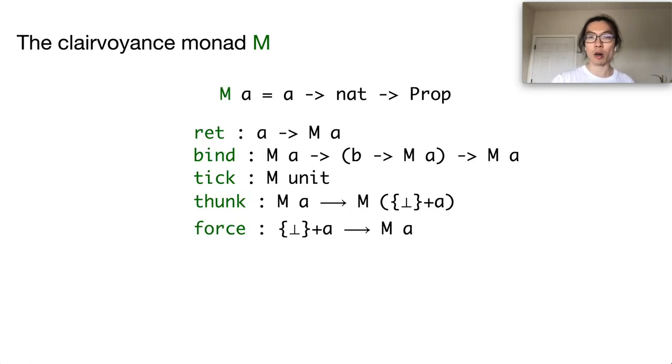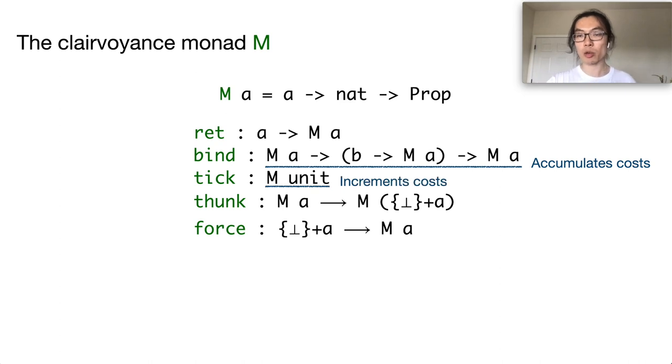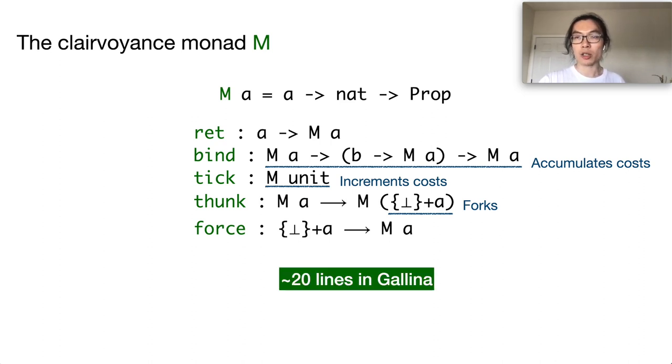We can define the following operations on the clairvoyant monad. The first two operations are the monadic operations. In particular, bind is the operation that accumulates the cost across a program. Tick operation is the operation that increments the computation cost. Thunk and force are the operations that model non-determinism. All these operations can be defined using around 20 lines of code in Coq.